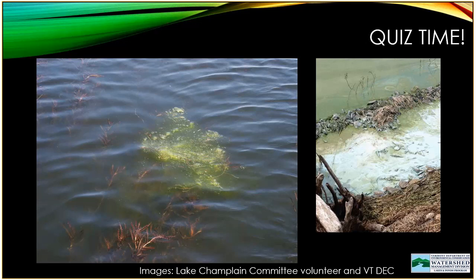A photograph taken during an intense cyanobacteria bloom beginning to break down on a hot day shows white foam and discolored material along the shoreline ridge. A close-up like this confirms you have a cyanobacteria bloom. Whether it's Category 2 or 3 depends on the extent — if it extends far out across the lake or down the shoreline, it could be Category 3. If you send only a close-up photo without extent information, we'll contact you to get those additional details.